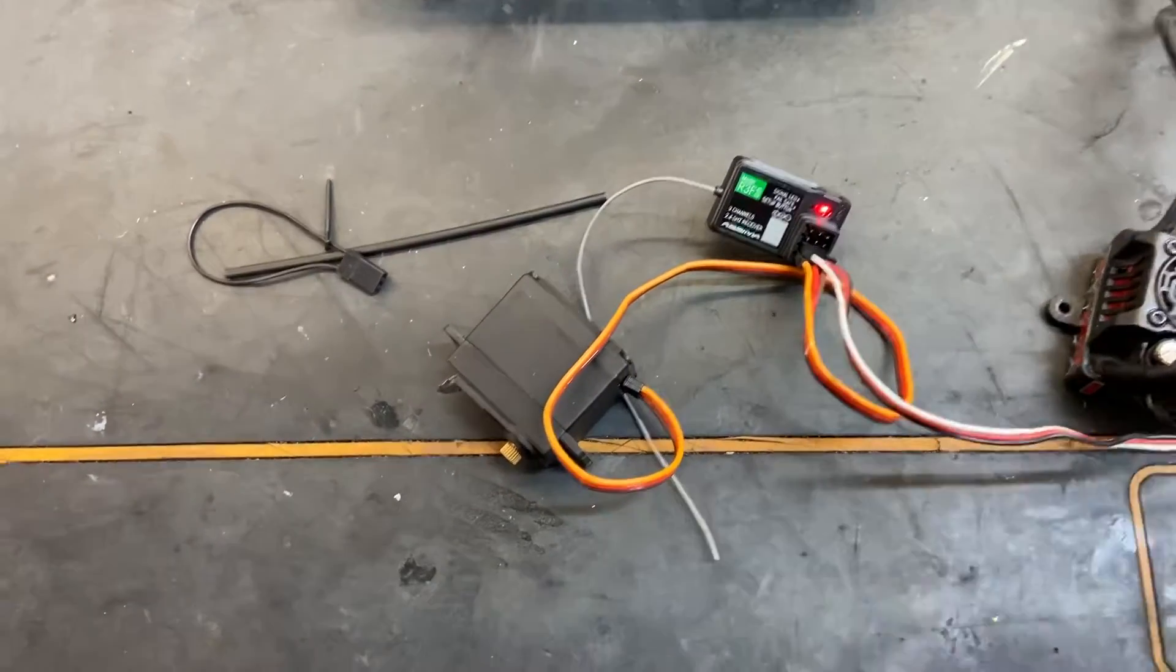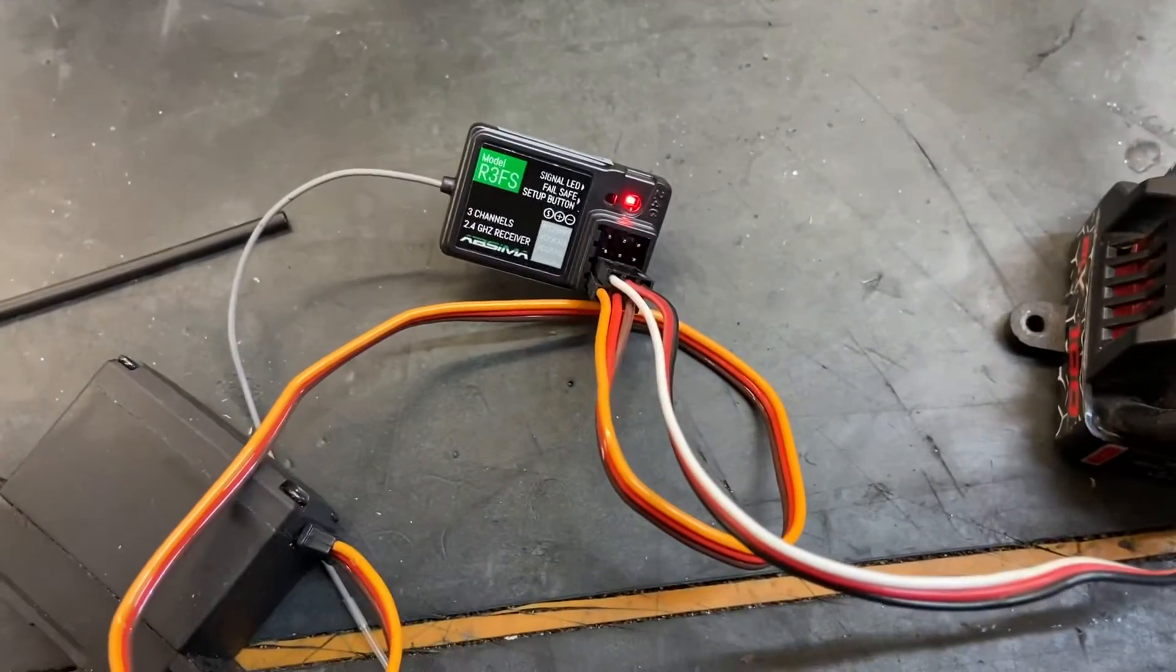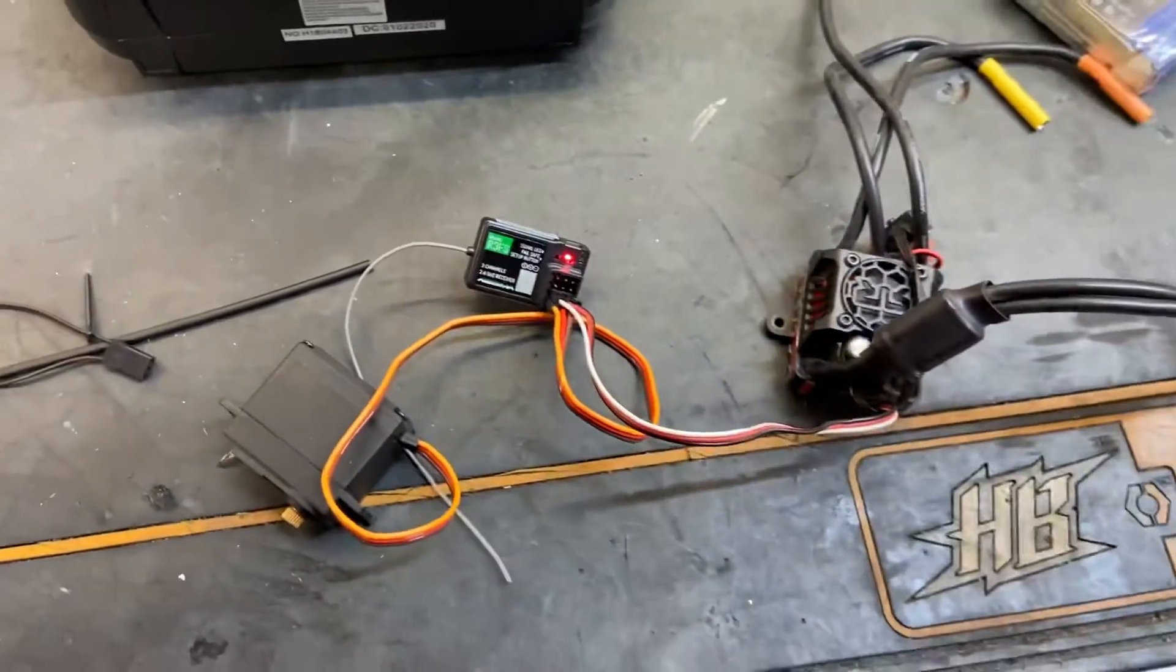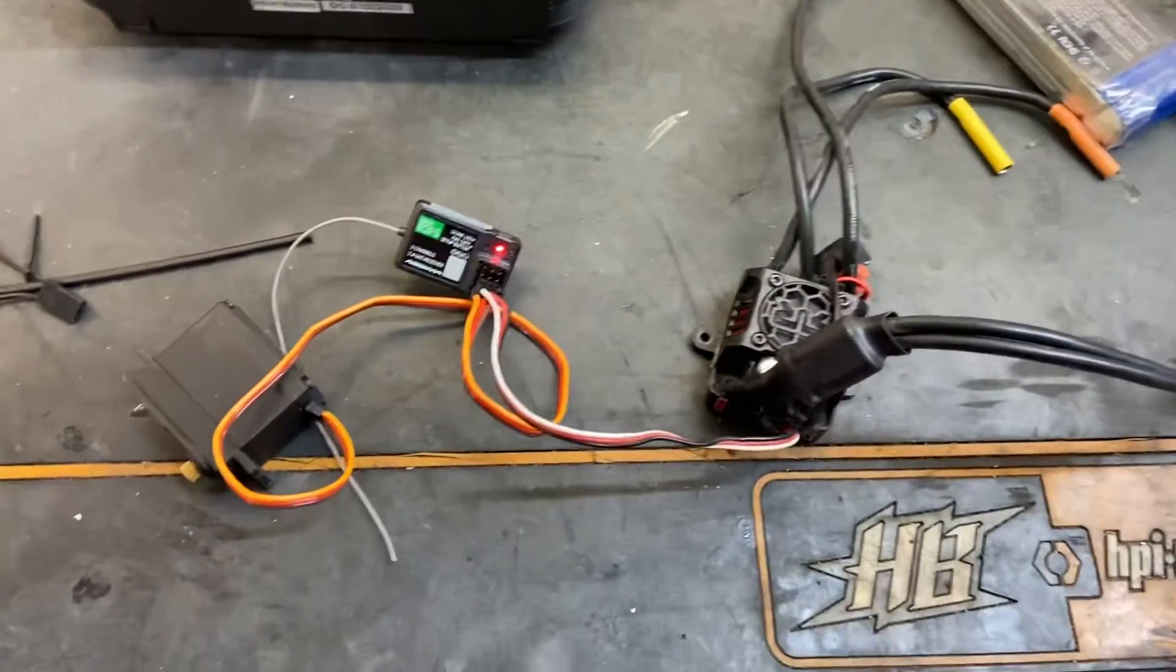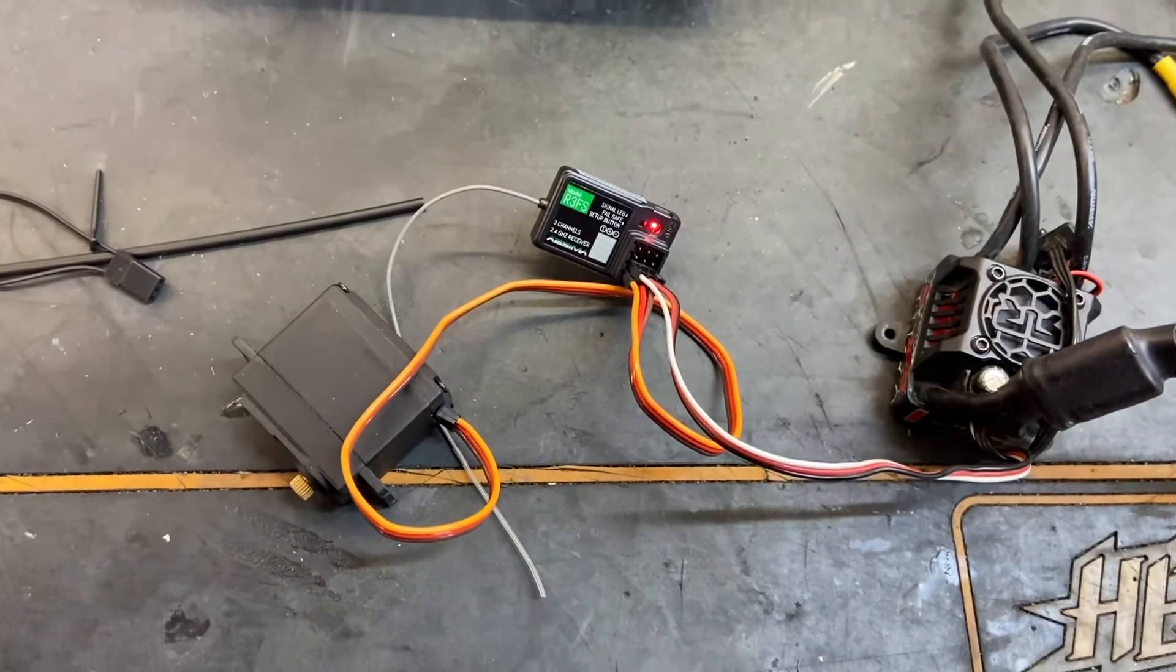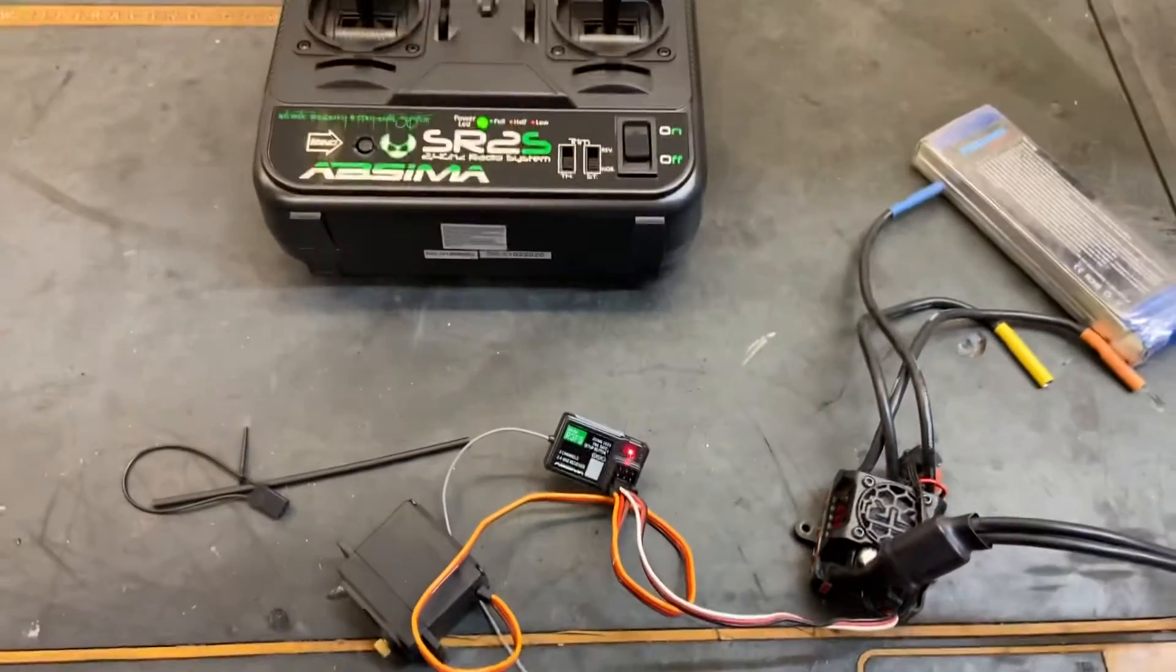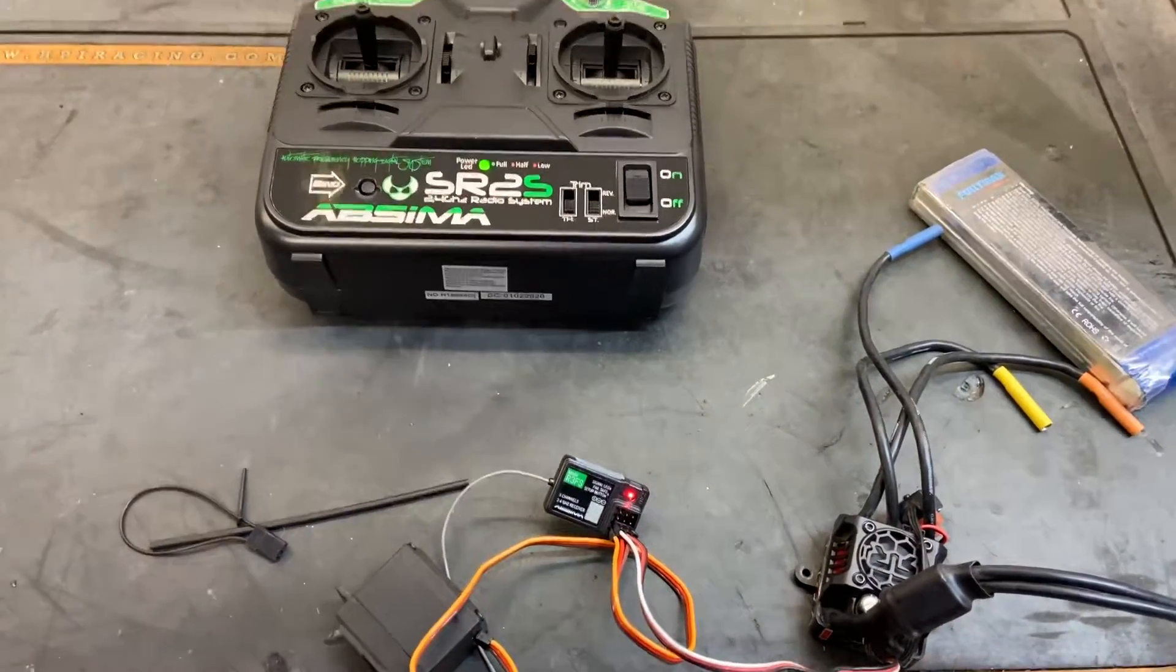Power the receiver on. Then we should have a solid red light. Give it a test. We haven't got the motor plugged in so we can't test that output, but yeah, that's the basics of wiring it up and binding the Absima SR2S radio set. Thanks.